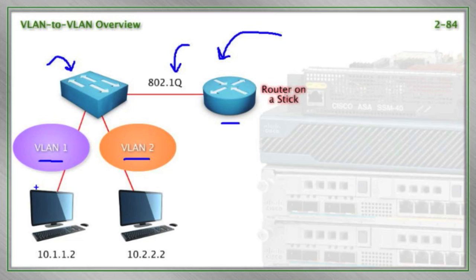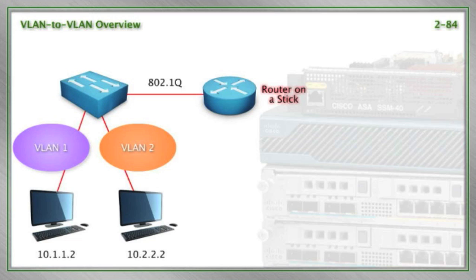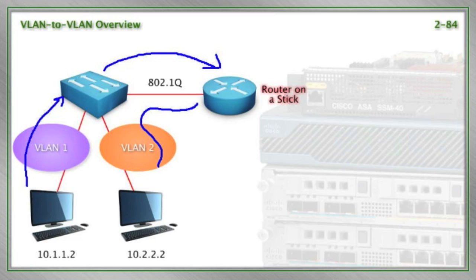We're going to have 10.1.1.2 send the traffic into the switch — VLAN 1, destined for VLAN 2. We're going to have the switch send this over the trunk to the router, and then have the router route the traffic into the other VLAN.